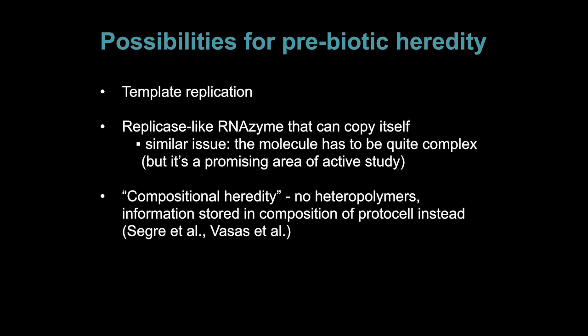Another possibility is called compositional heredity. The idea here is that you don't start with polymer sequences at all, but instead you start with protocells of some kind, which are assemblies of many different molecular species, and the heritable information is transferred not in the form of a sequence, but in the form of the composition of the protocell, which would be inherited when it divides in two. There are theoretical studies showing that this could in fact be possible to support evolution this way.